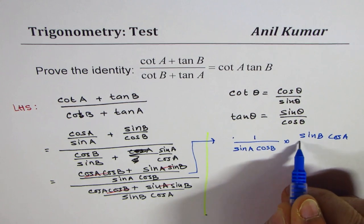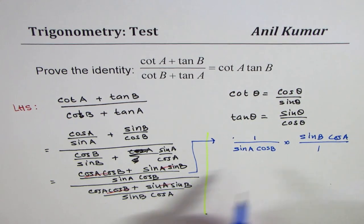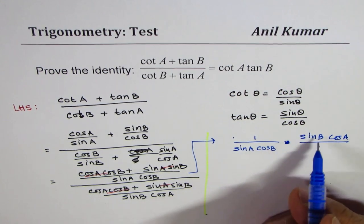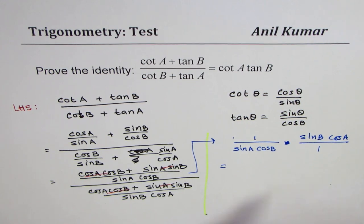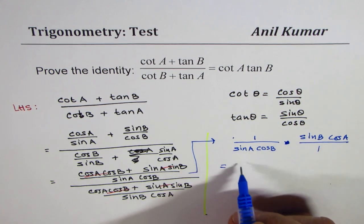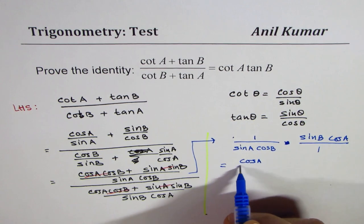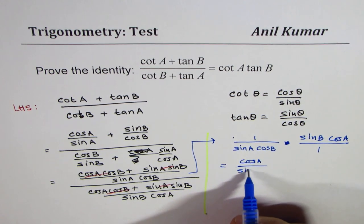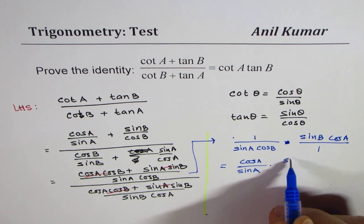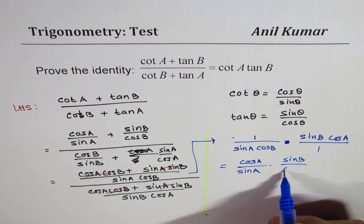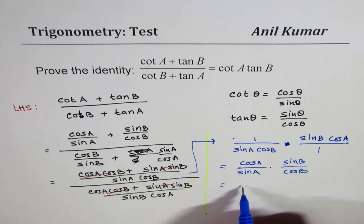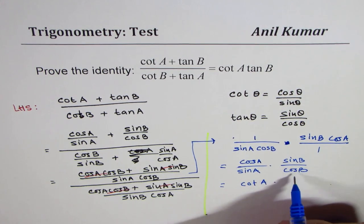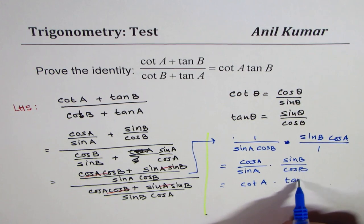We can now rearrange and combine the terms. We can write this as cos A over sin A, times sin B over cos B. Cos A over sin A is cot A, and sin over cos is tan, so we get tan B. So the result is cot A times tan B.